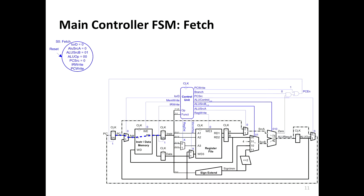A mux can select either set of bits from the instruction register as long as we're not going to write to the register file — we don't care about that, which is what the don't-care is about. Don't-cares let you simplify the generation of control signals. There's also the PC-write control signal: at the end of the state, we increment the PC for sequential execution. If we later find out it's a branch, we can overwrite the PC again in the finite state machine.